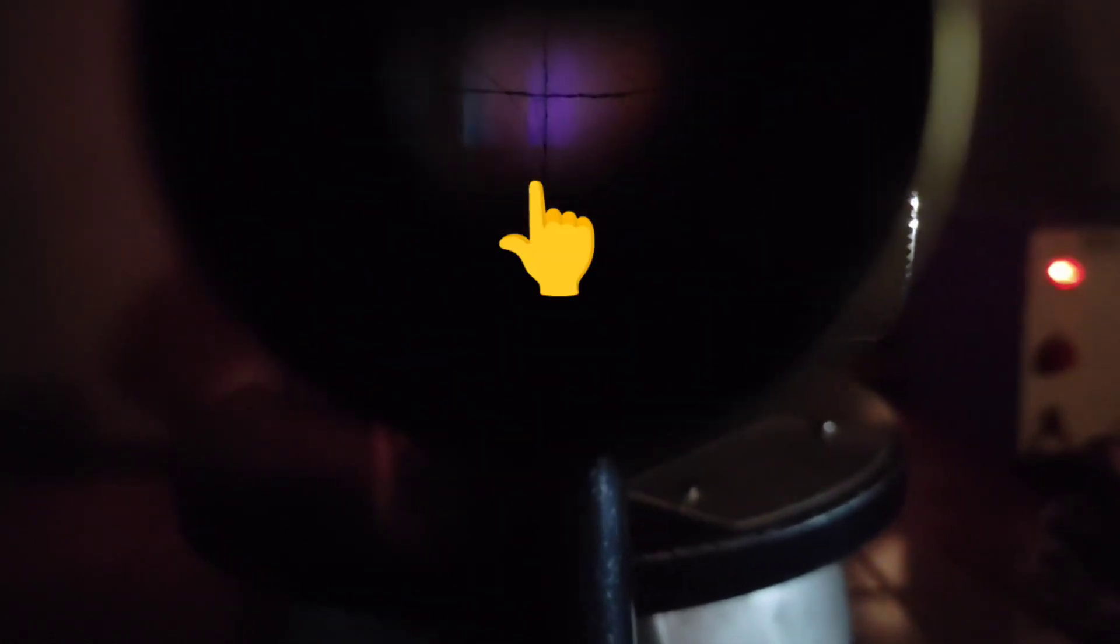Now, to take reading, we have to place the telescope cross wire on the particular color we are going to take reading. Here you can see I have placed it at violet color. So we are going to take reading for violet color.